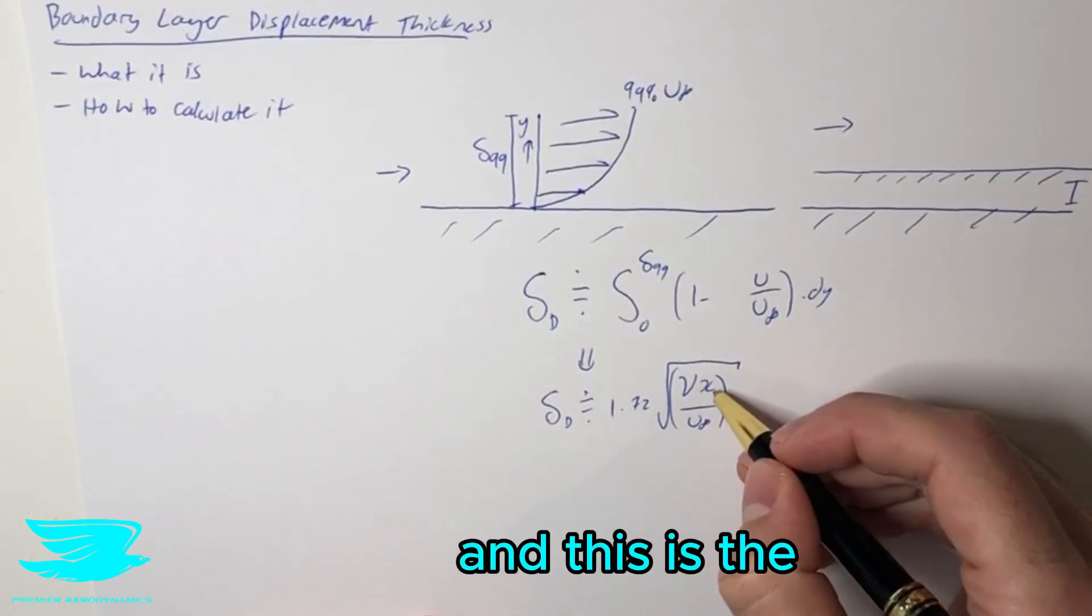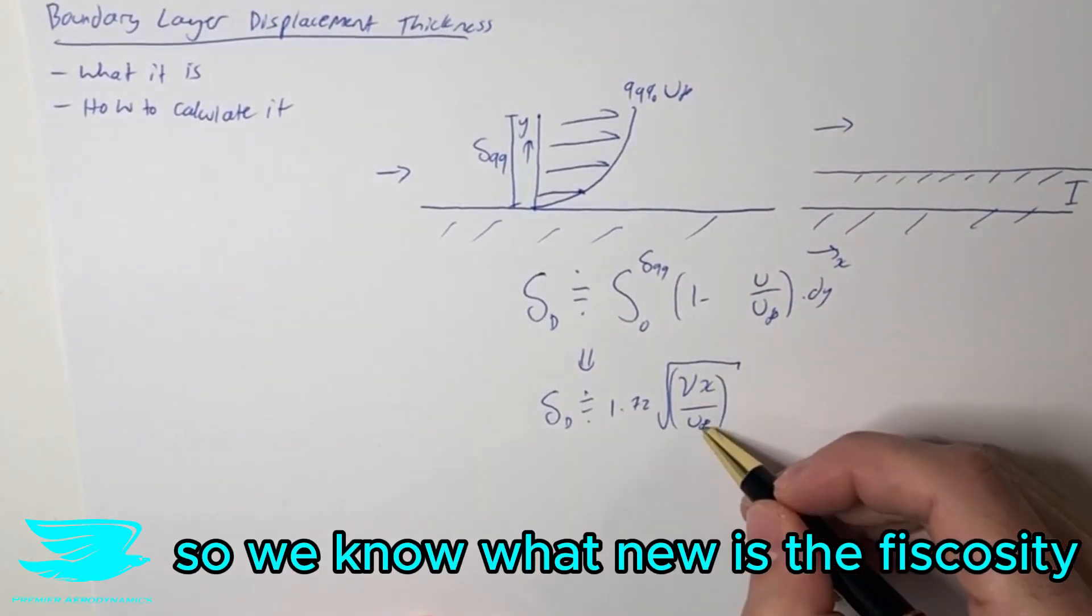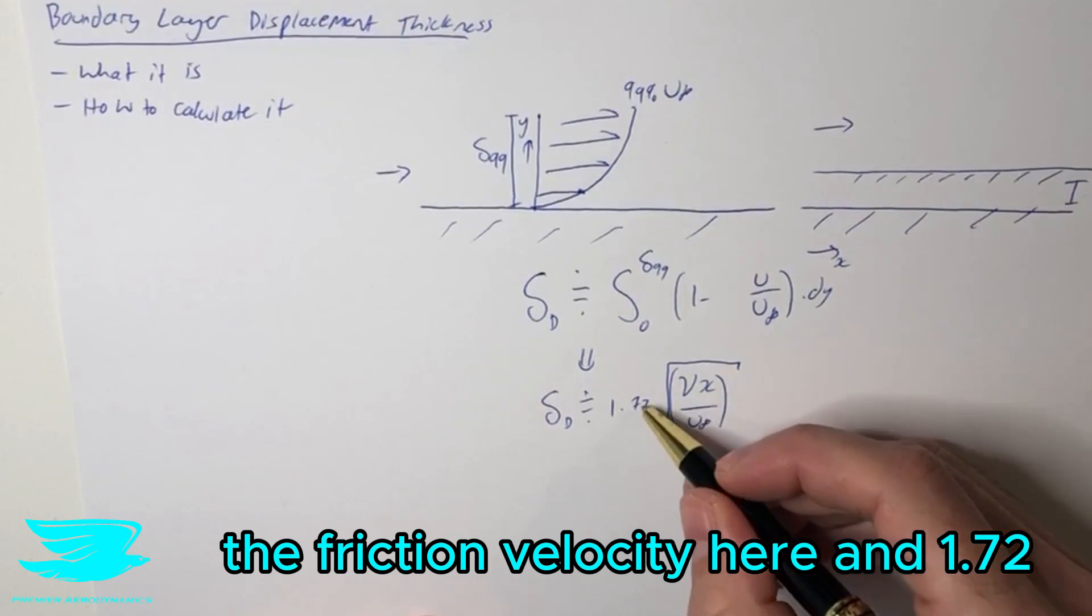And this is the thickness as we go along in the x direction. So we know what nu is, the viscosity, the freestream velocity here, and 1.72.